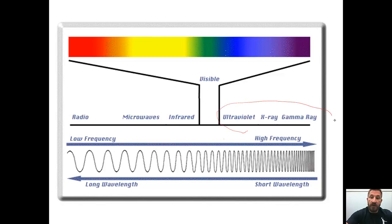Once again, notice here we have our higher energy waves, ultraviolet, x-ray, and gamma. In between that we have visible light, and then the low frequency, long wavelength would be radio and microwaves.